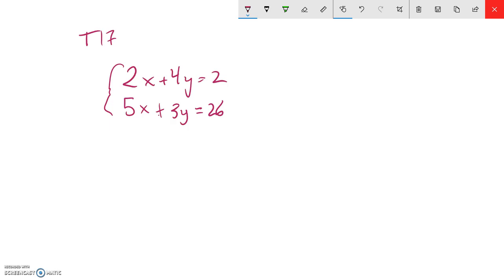So I'm going to do the elimination method, and I could choose either x or y to get rid of. I'll eliminate x. So what I'm going to do is multiply this top equation by 5 and this bottom equation by 2, so that these will both be 10x's, so I can cancel them out.